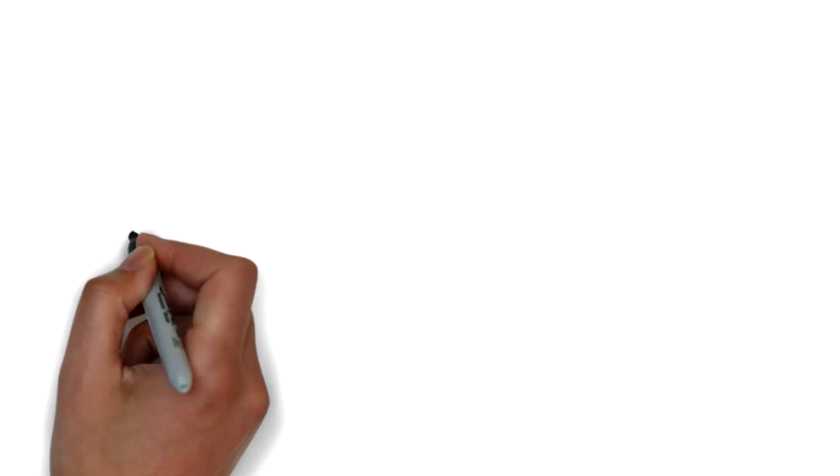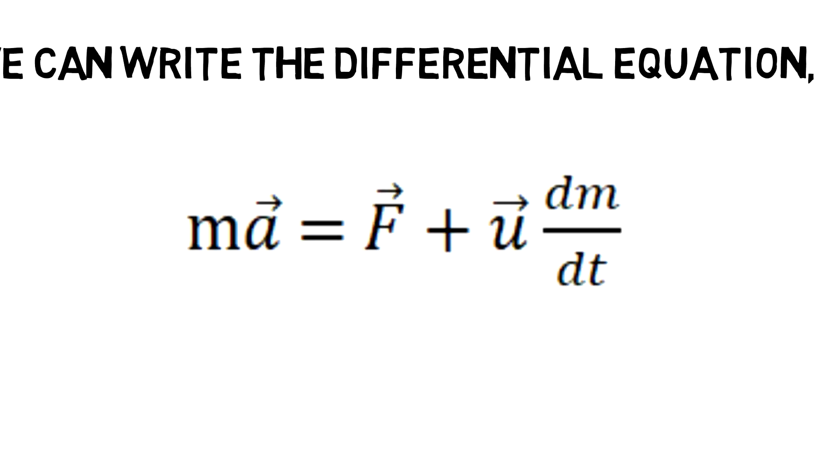Thus we can write the differential equation as ma = F + u dm/dt. Here a is the acceleration of the system, dm/dt is the change of mass, and u is the initial velocity.